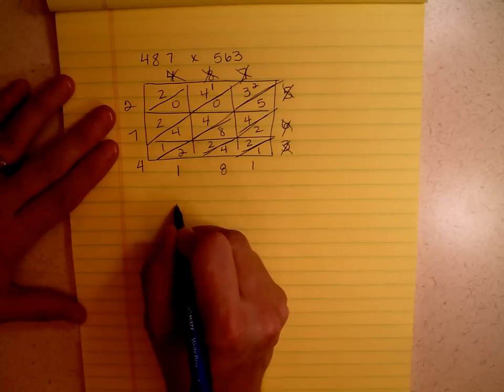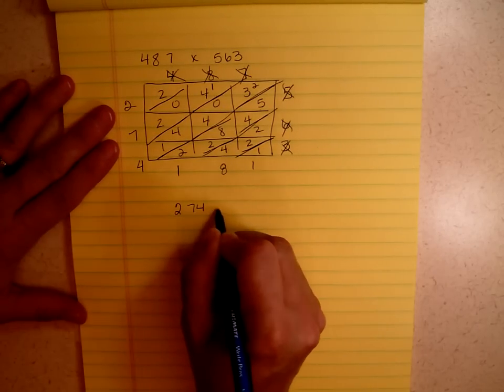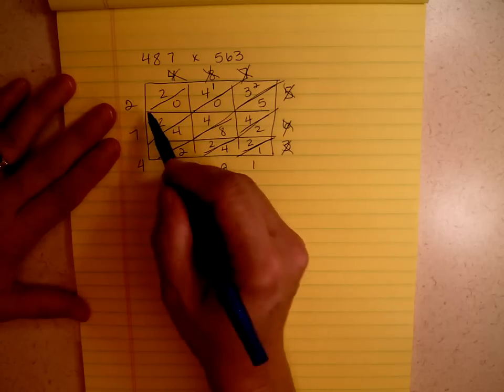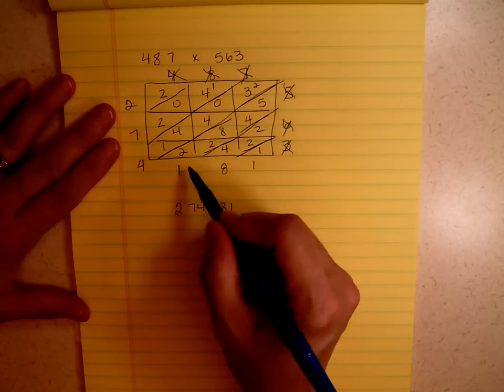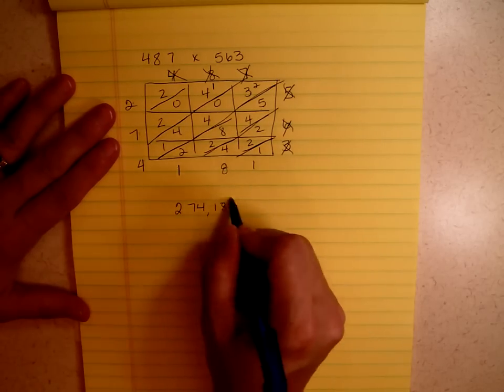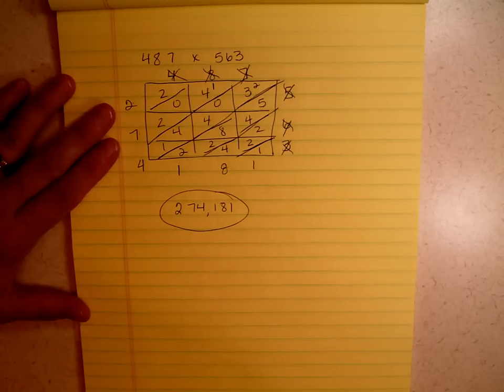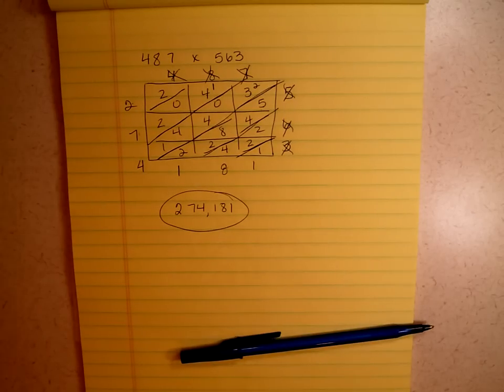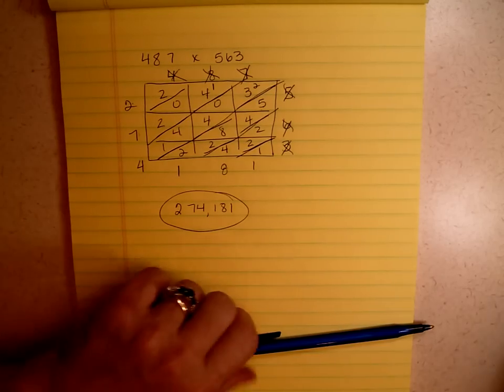I'm going to start writing my numbers. 2, 7, 4, 1, 8, 1. 274,181. I hope you like matrix multiplication. I know I do. It certainly has made my life a lot easier.